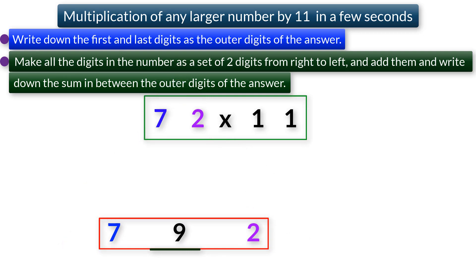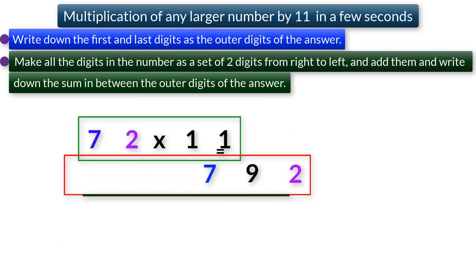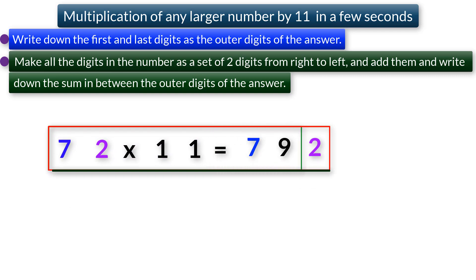That's it. So, if you multiply 72 by 11, you will get 792.